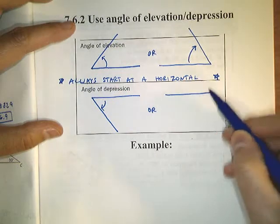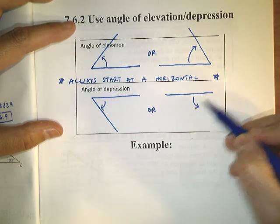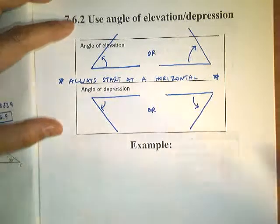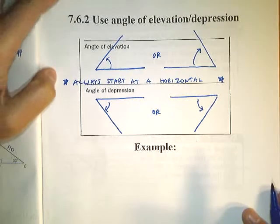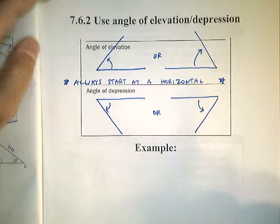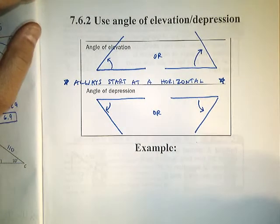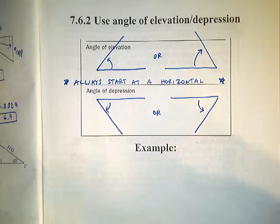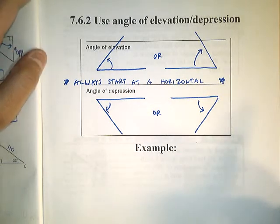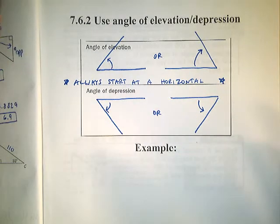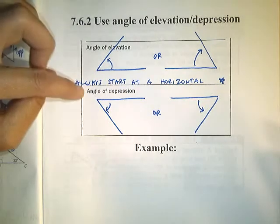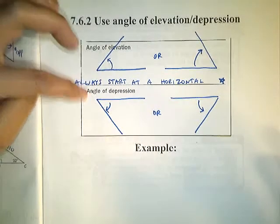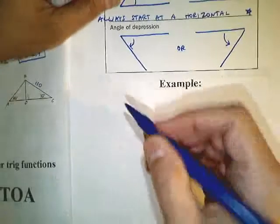Starting at a horizontal and rotating down is an angle of depression. I'm going to draw some triangles and we're going to identify any corners that are either type — angle of elevation or angle of depression.